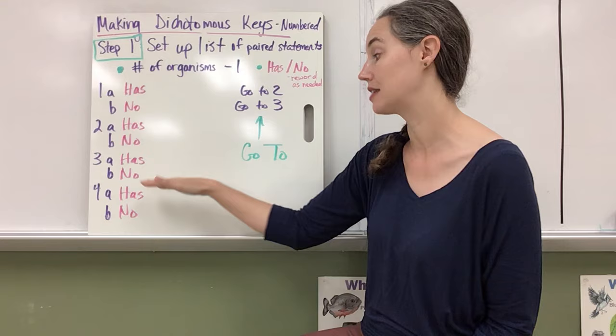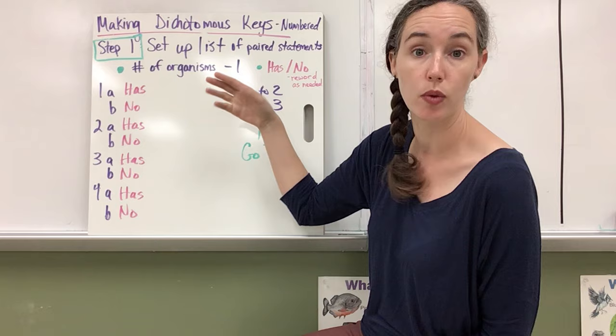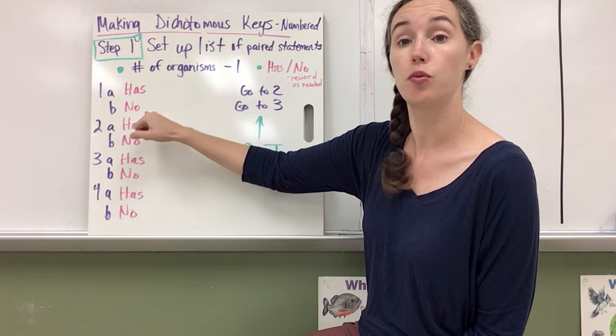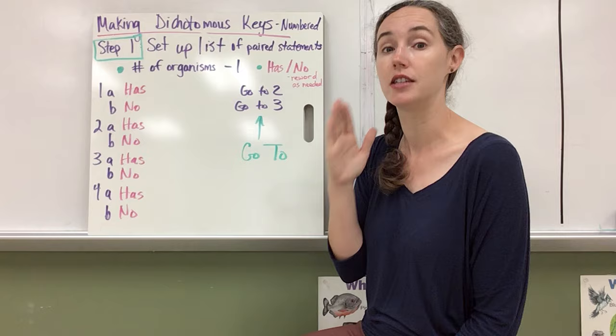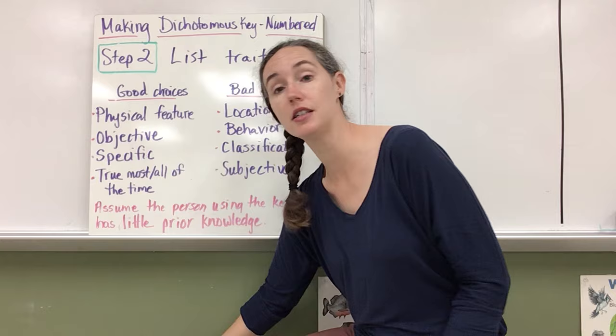And of course you can reword these as necessary as you make your key, but basically it's got it or it doesn't have it. And then the last thing you want to do is next to statement 1A has, your instruction will be go to two. And on 1B, your instruction is going to be go to three. So you don't want to start identifying right out of the box. You want to break it into two groups. And that is what step two is.